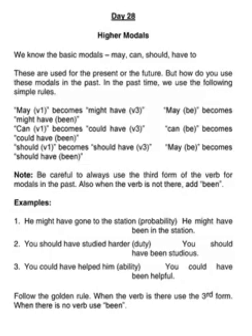For higher modals — modals in the past — should becomes should have; should be becomes should have been. May becomes might have; may be becomes might have been. Can becomes could have; can be becomes could have been. And with each of these, if the verb is there, you put the third form.